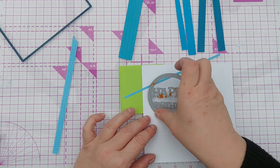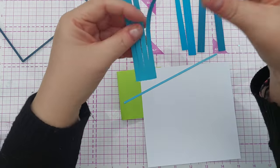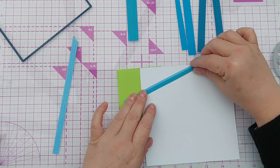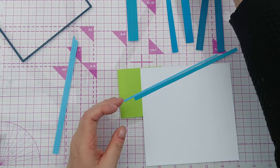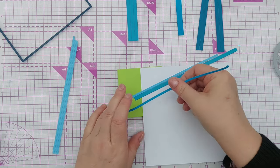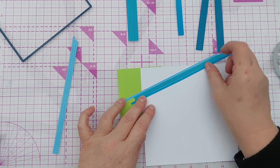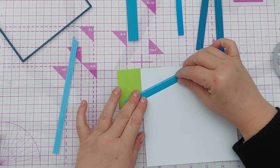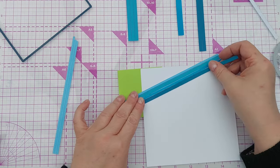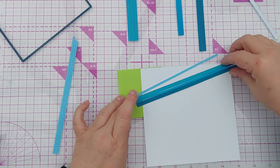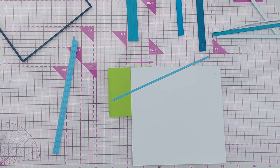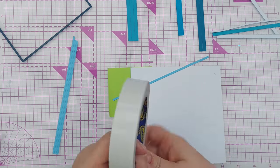I'm going to go down and add my strips - thick, thin, thick, thin - in the order that I inked them: Tumbled Glass, Broken China, Salty Ocean, Uncharted Mariner. I'll repeat that till I get to the bottom of my circle. I think the best thing to do will be to put some double-sided sticky down now that I've got a vision for where this is going.